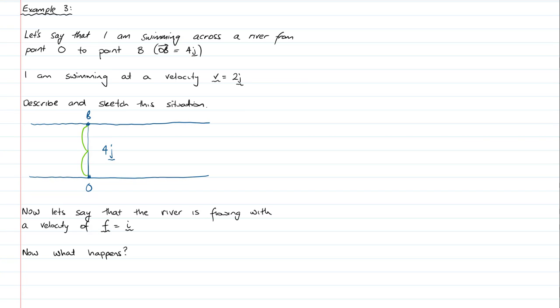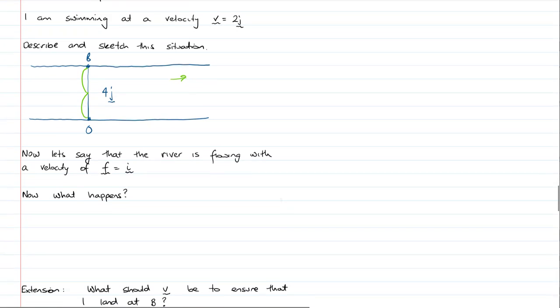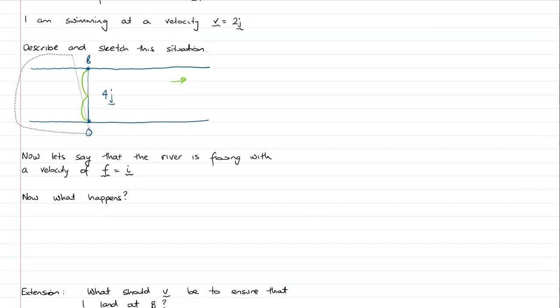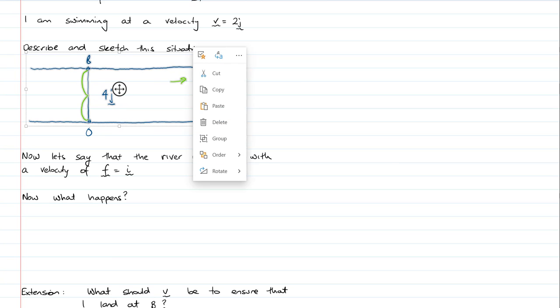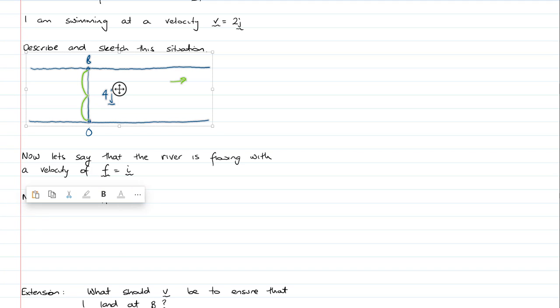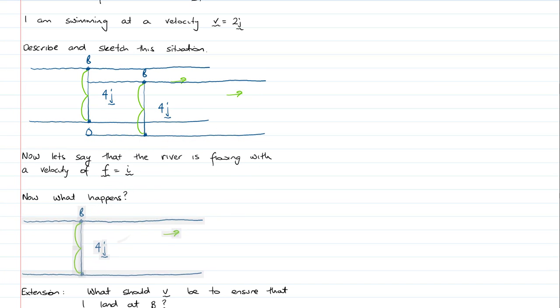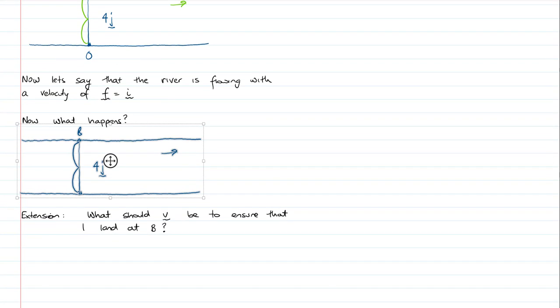Now let's say that the river is flowing with the velocity or the flow rate of I. So that means the river is flowing in the positive I direction, this way. And it's flowing at I. So what happens? The question about what happens is a really important question, because there's now something else in the mix. And that other thing in the mix is a flow rate.